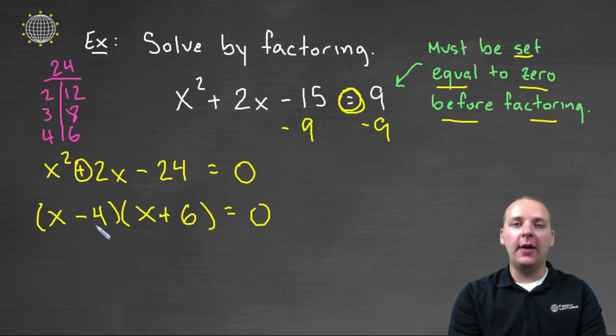And as an added bonus, the L, FOIL in FOIL, negative 4 times 6 would give us negative 24 as it should. So great, I factored the left-hand side. And so here comes the zero property.